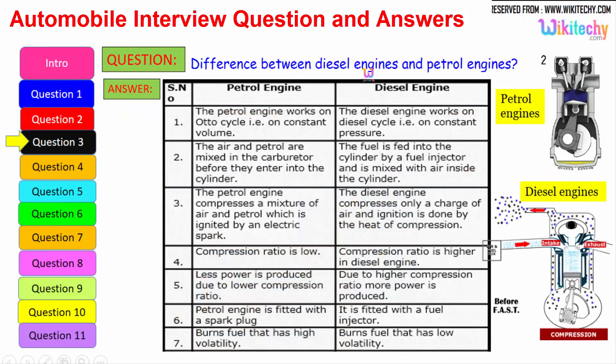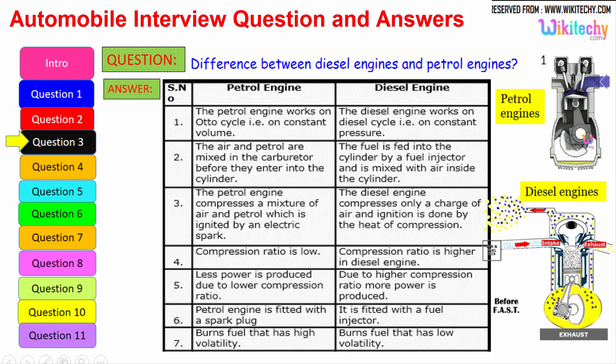Let us see the difference between the diesel engine and the petrol engine. The petrol engine works on Otto cycle, therefore on constant volume, whereas the diesel engine works on diesel cycle at constant pressure. The air and petrol are mixed in the carburetor before they enter the cylinder. The fuel is fed into the cylinder by a fuel injector and is mixed with the air inside the cylinder. The petrol engine compresses a mixture of air and petrol which is ignited by an electrical spark.